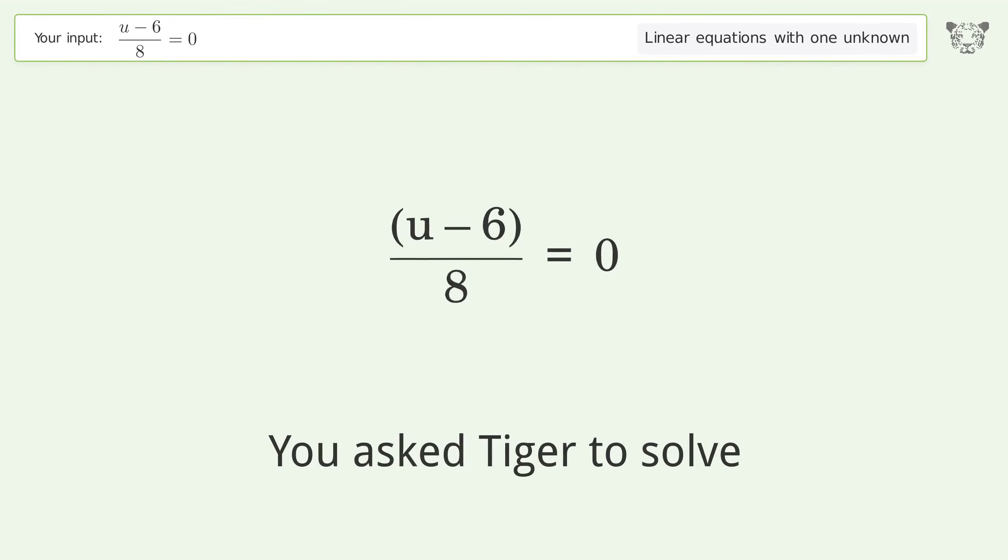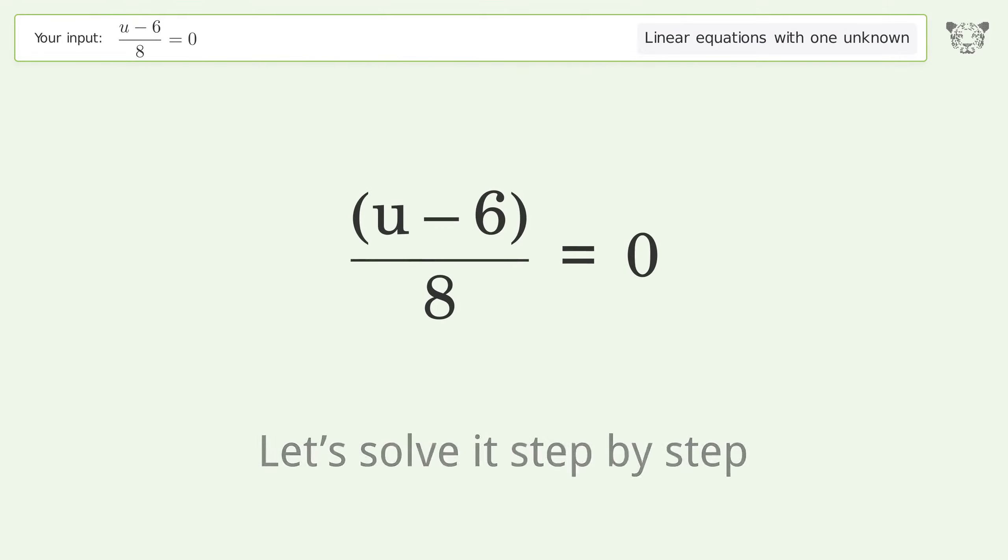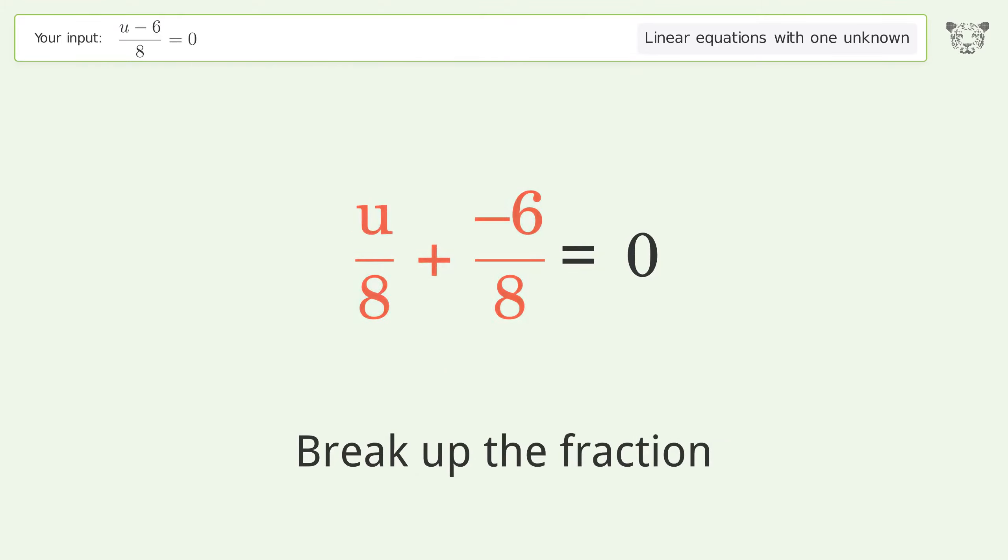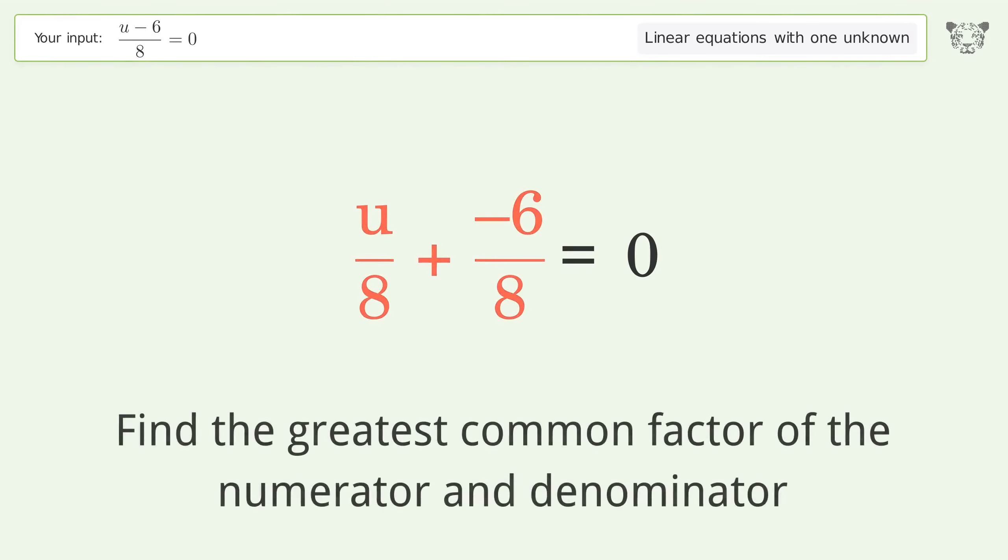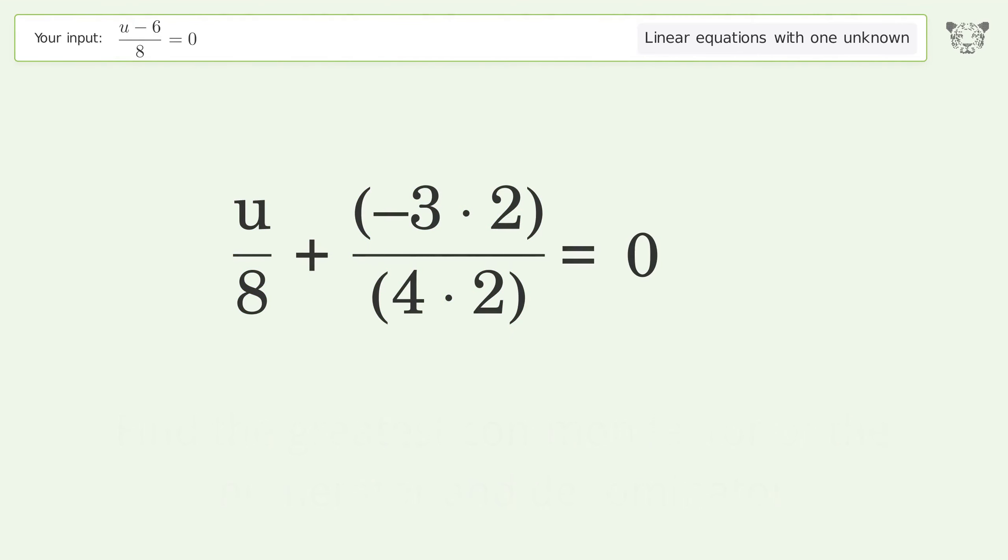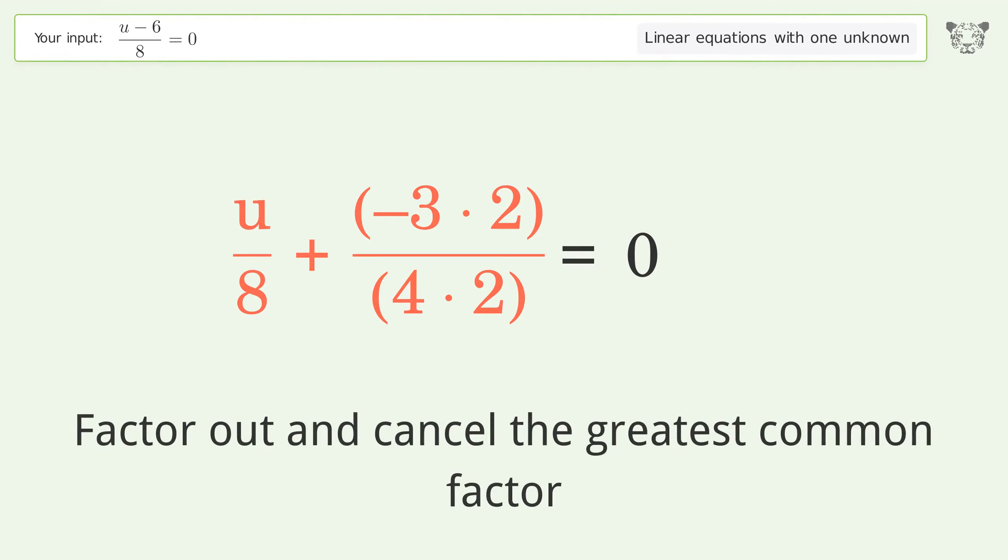You asked Tiger to solve this. This deals with linear equations with one unknown. The final result is u equals 6. Let's solve it step by step. Simplify the expression, break up the fraction, find the greatest common factor of the numerator and denominator, then factor out and cancel the greatest common factor.